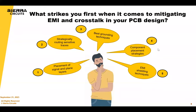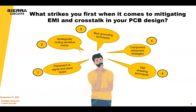What strikes you first when it comes to mitigating EMI and crosstalk in your PCB design? Key considerations include placement of your layers, routing sensitive traces strategically, grounding techniques, component placement strategies, and EMI shielding techniques. There's no single correct answer — they're all important. If there's one topic more important to you than another, please ask or chat.